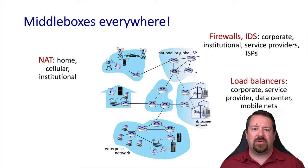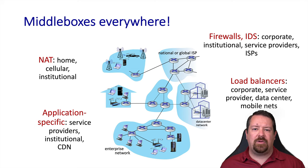Another type of middlebox involves traffic engineering or load balancing, which may look at properties of traffic beyond the layer 3 destination to determine how to forward it. There can also be application-specific middleboxes or gateways that perform particular optimizations to traffic — one example is mobile networks that reduce the quality of images or videos on the fly in between the content provider and the mobile device.